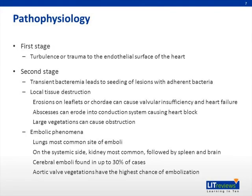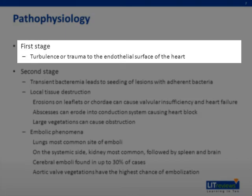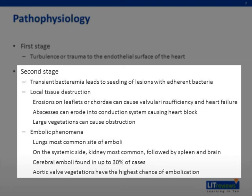The development of endocarditis requires several steps. The first stage is typically turbulence or trauma to the endothelial surface of the heart. The second stage requires a transient bacteremia that leads to seeding of these previously created lesions with adherent bacteria. This ultimately leads to local tissue destruction, defined as erosions on leaflets or cordae that can cause valvular insufficiency and ultimately lead to heart failure. Abscesses can erode into the conduction system causing heart block.